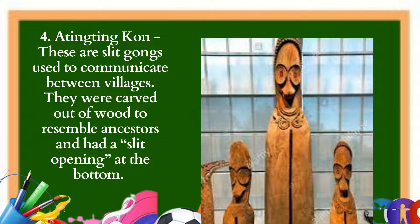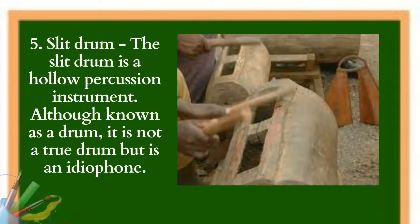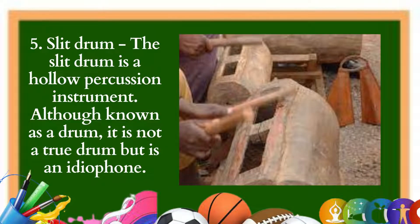5. Slit drum: The slit drum is a hollow percussion instrument. Although known as a drum, it is not a true drum but is an idiophone. It is usually carved or constructed from bamboo or wood into a box with one or more slits in the top. Most slit drums have one slit, though two and three slits cut into the shape of an H occur. If the resultant tongues are different in width or thickness, the drum will produce two different pitches.